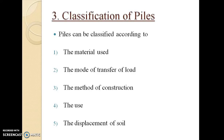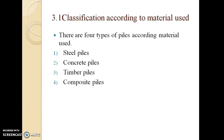Let us go through the classification of piles. The piles used in construction are classified according to different bases. The first basis is material used: if the pile is made up of steel, it is called a steel pile. Similarly, there are concrete piles, timber piles, and composite piles. A composite pile can be made up of a combination of two or more different materials.